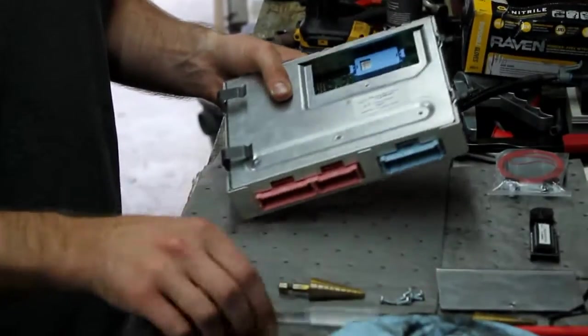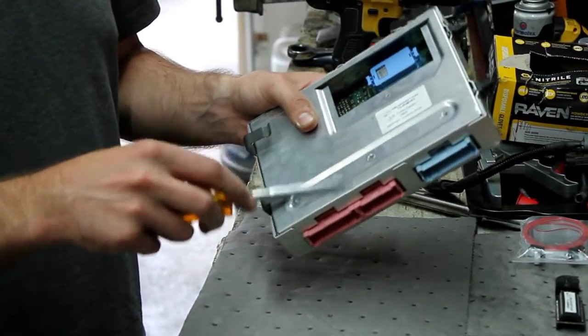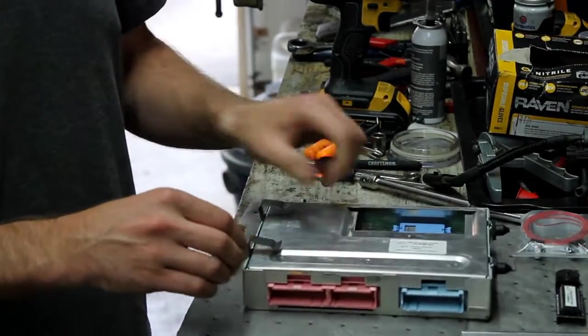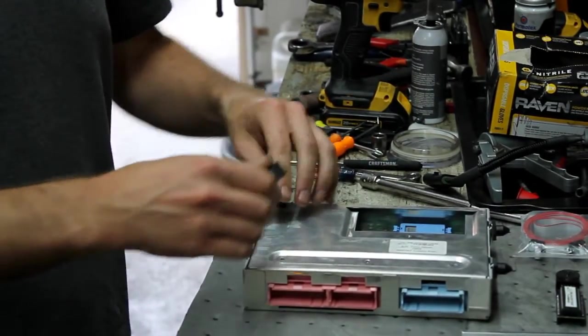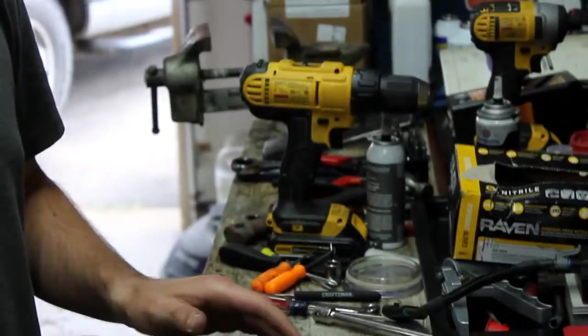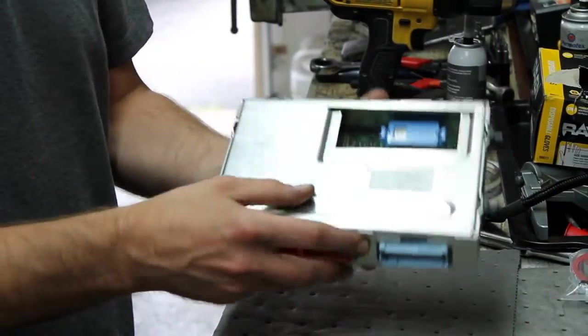We also have three Torx screws that actually hold the board to the housing. Let's take that out, everything's freed up. We can gingerly remove the clips, we'll also reuse those later on. Now we're ready to pull the board from the housing.